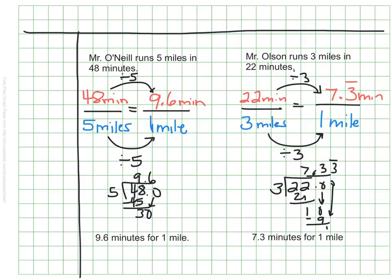Now that I've calculated how long it will take each of them to run the same distance, the same one mile, I can see that Mr. Olson needs less time and is therefore faster. Mr. Olson, in this example, runs faster than Mr. O'Neill.